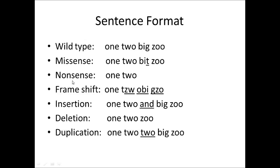Now let's move on to a nonsense mutation. A nonsense mutation is where we introduce a stop codon — UGA, UAA, or UAG — abnormally early into the sequence. So 'big' would switch into a stop codon, stopping literally everything from that point onward. Our protein gets truncated. Nonsense mutations are very damaging.